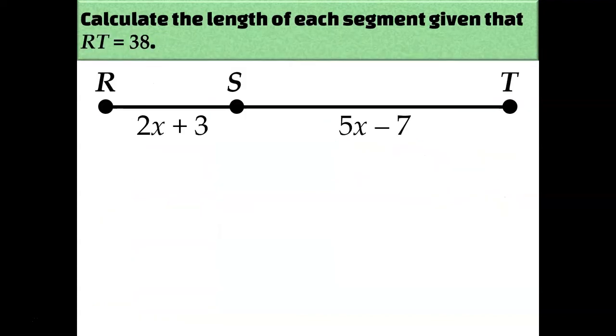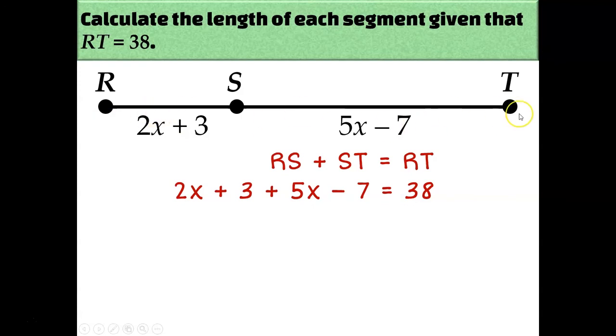Now we can also use the segment addition postulate even if our lengths are given as algebraic expressions like this. For this diagram, the segment addition postulate would be RS plus ST equals RT. RS is 2X plus 3, ST is 5X minus 7, and RT is 38. Now you might be saying, where did 38 come from? I don't see 38 anywhere on this diagram. And you're right, it's not on the diagram. Sometimes you'll be given a diagram and extra information in the directions, so be sure to look everywhere for all of the information that you might need. In this case, the 38 is coming from the original directions.